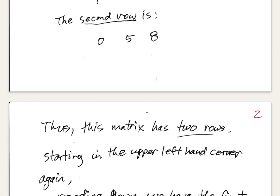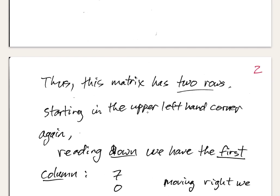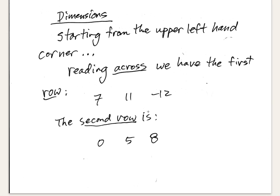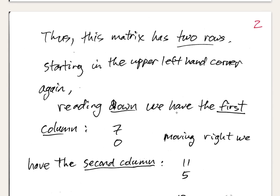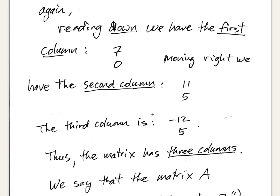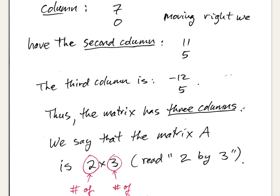Starting again in the upper left-hand corner, reading down gives us the first column: 7, 0. The second column is 11, 5, and the third column is -12, 8. Columns go up and down — think of columns holding up the roof of a building — while rows go across. This matrix has three columns.